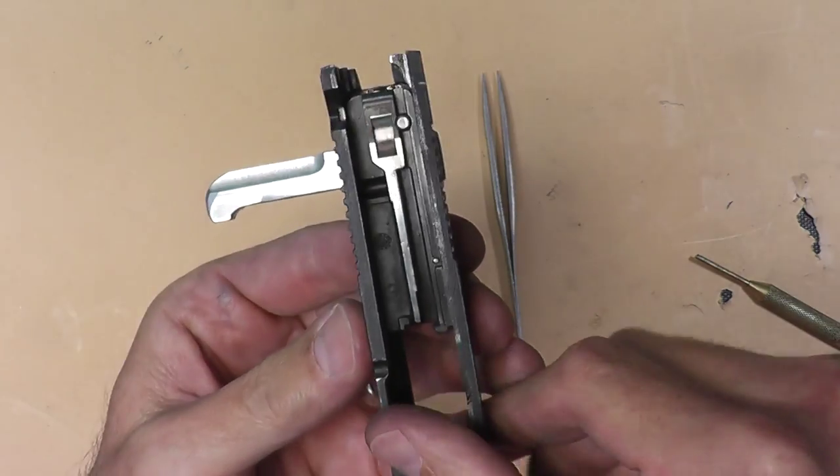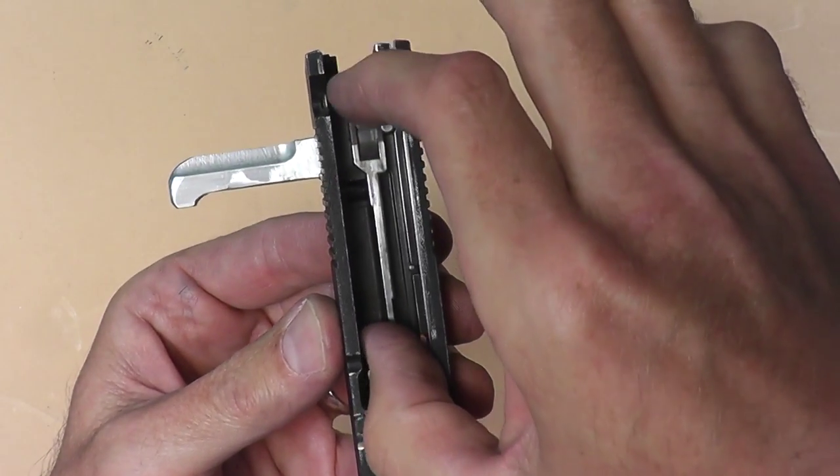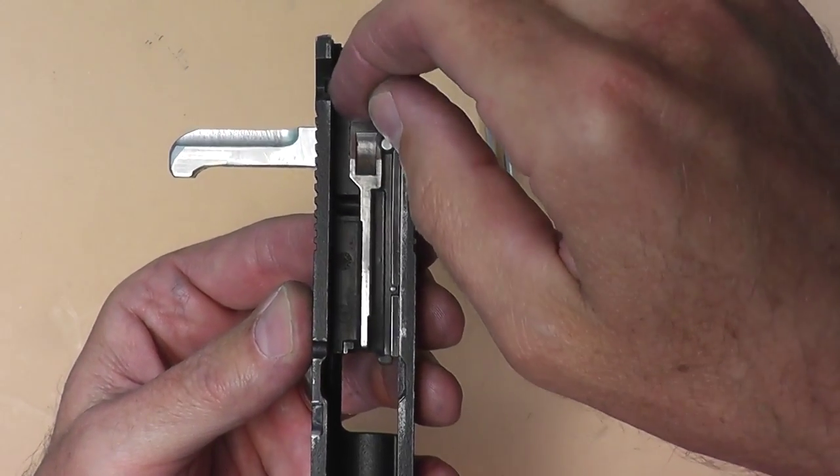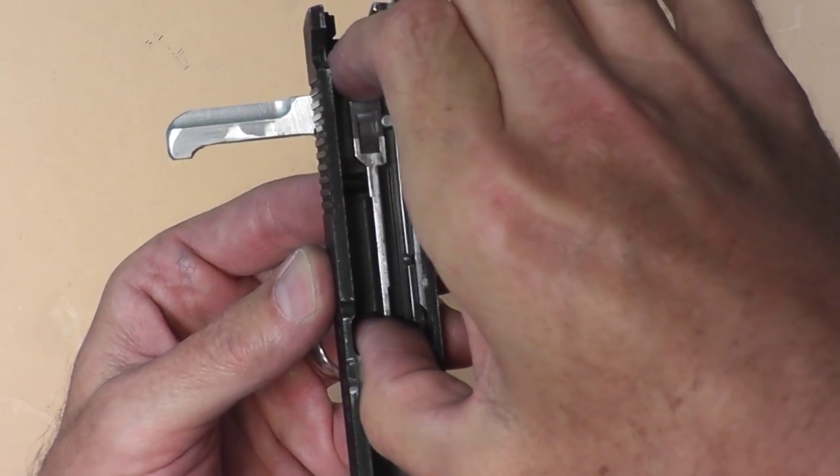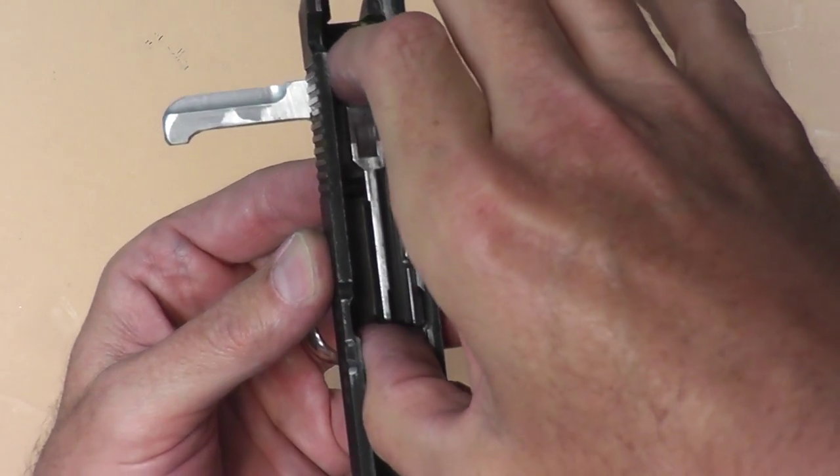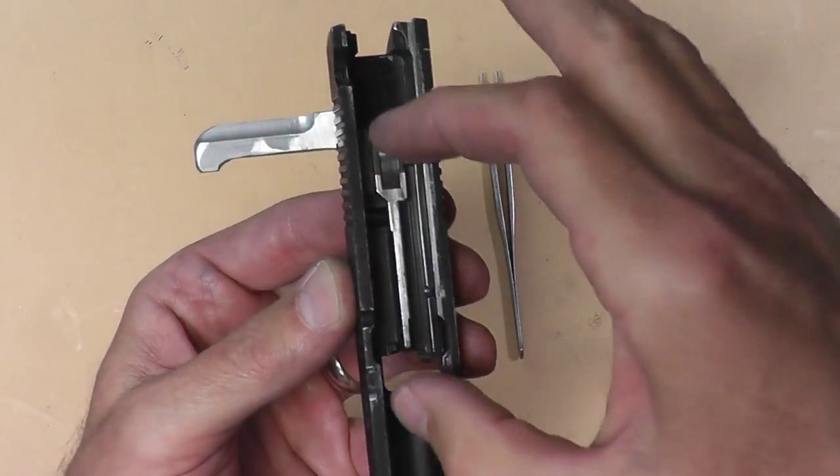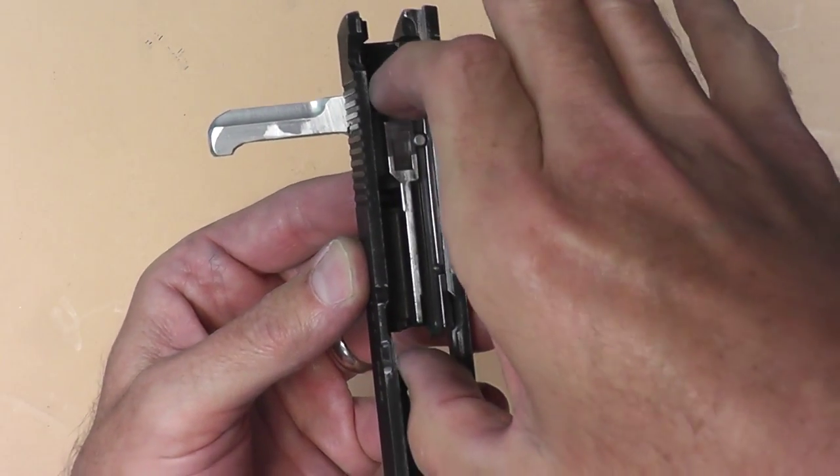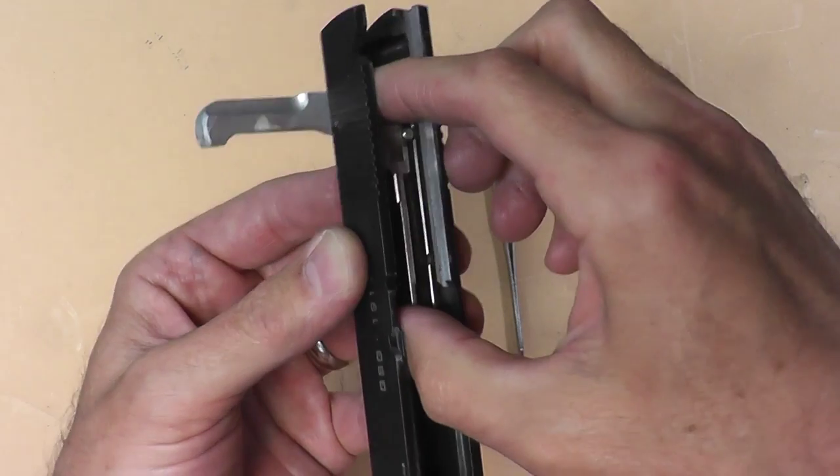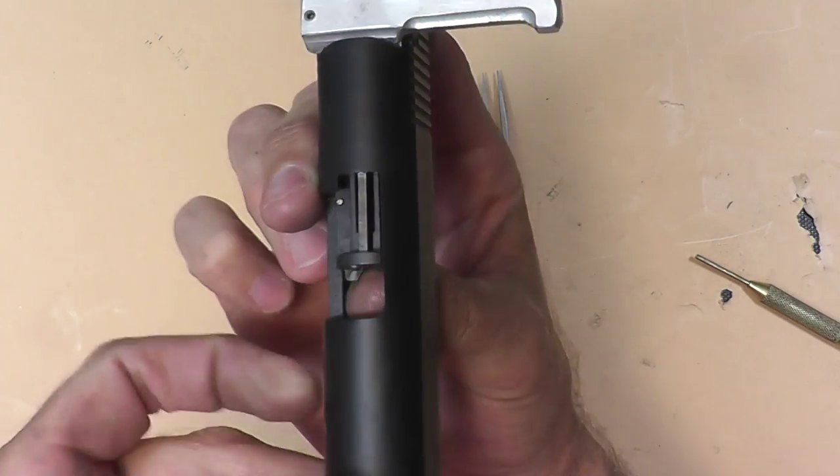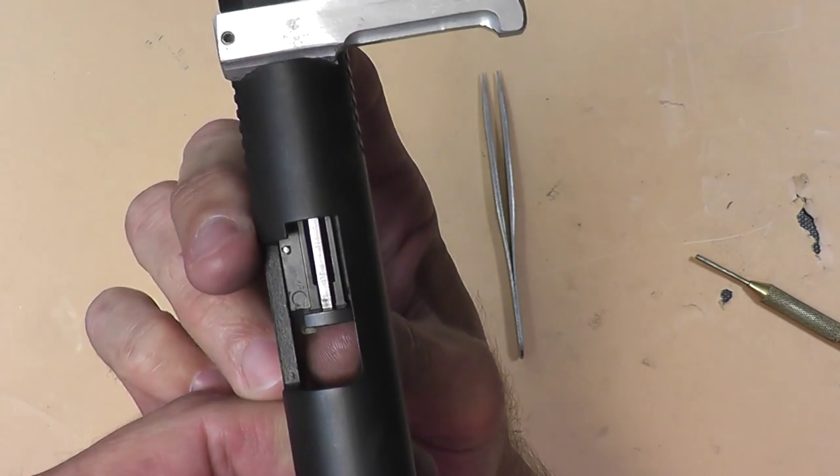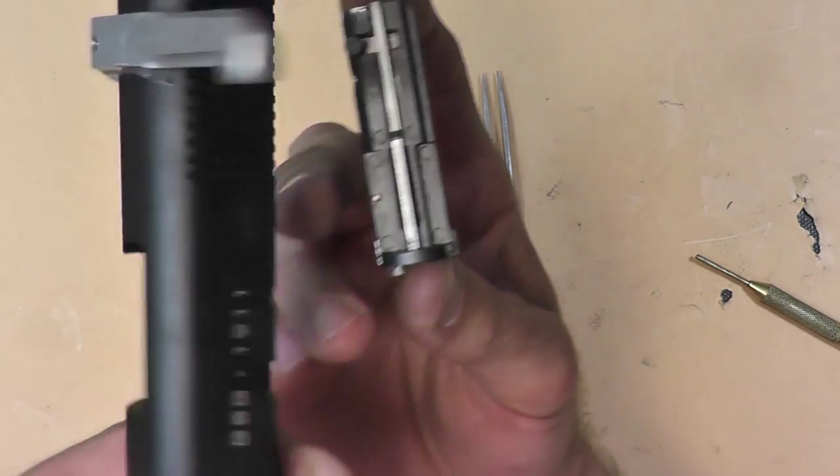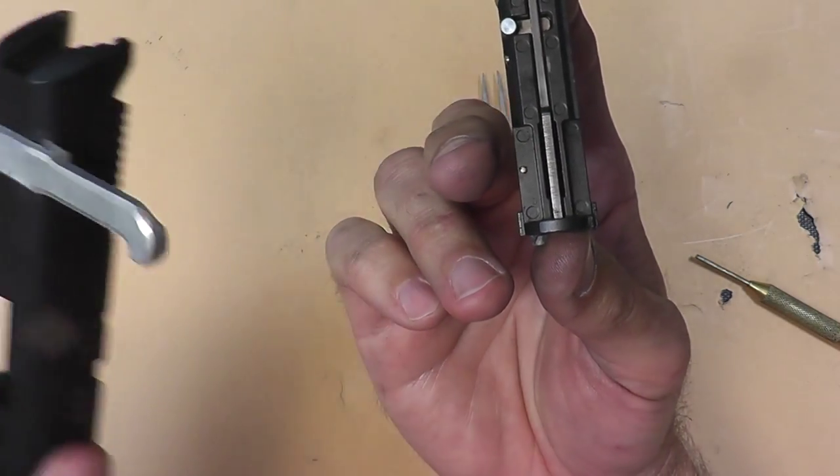So now we get this portion right here that slides back and forth. We want to slide it up to the front about a half inch I guess and then pull upward. So just keep sliding it forward until you can move it up and out of the frame or out of the slide. So I'm going to flip it over this way because there's a spring that's going to want to move out of the way. So once we get that out I'm going to set this off to the side.